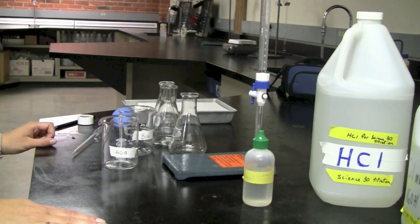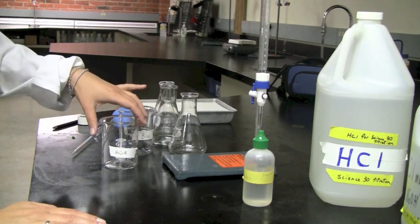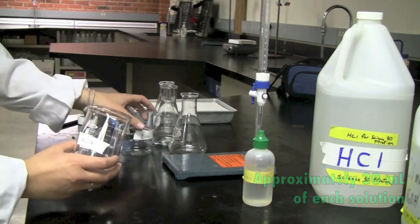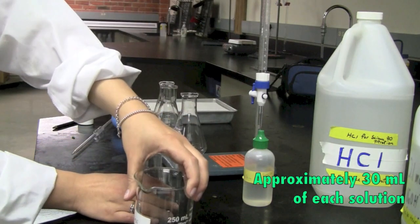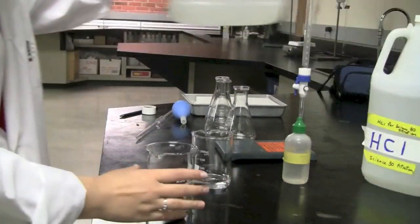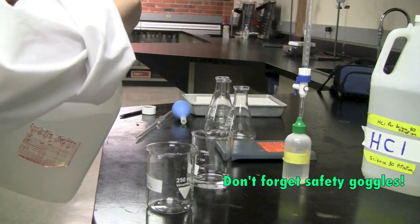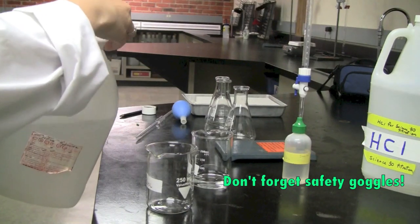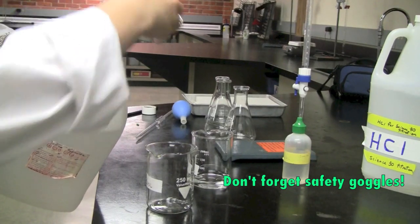First, what you're going to do is you're going to take your two beakers, one labeled acid, one labeled base, and you're going to obtain 30 milliliters of each solution. Because you are dealing with acids and bases and chemicals, you need to be very careful in terms of when you're pouring it into the beaker.